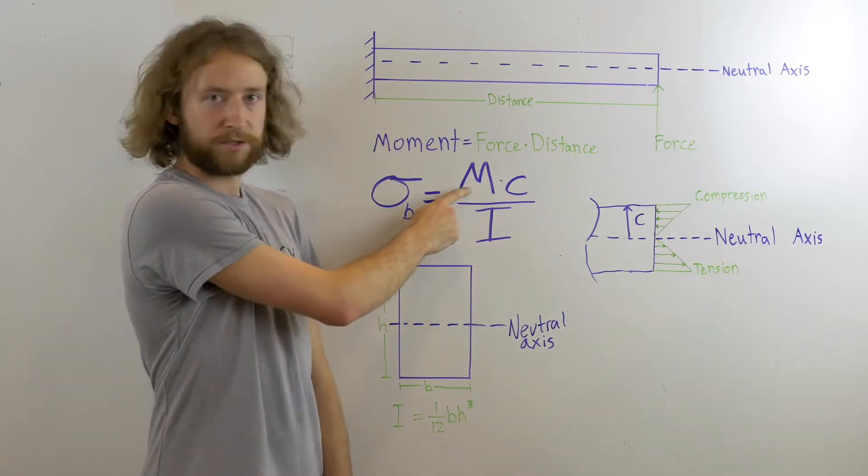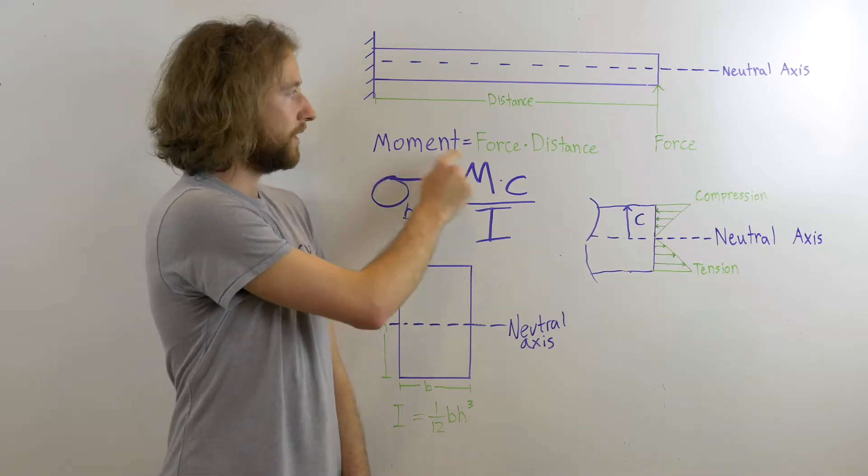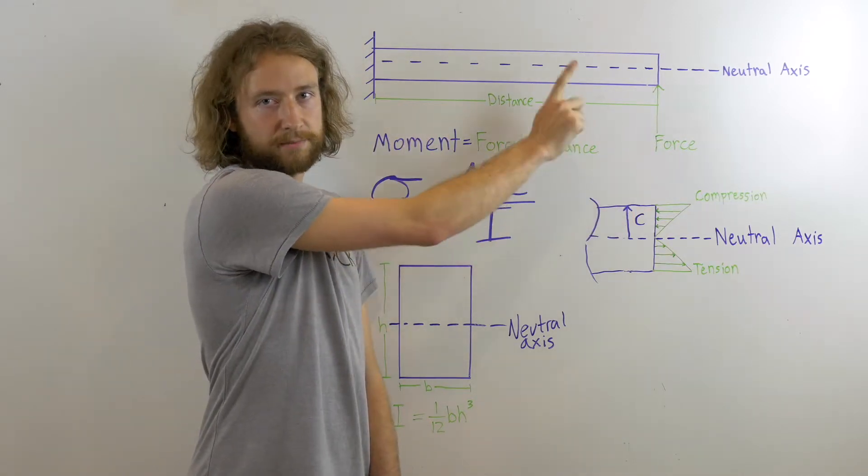To find the first part of your equation m, the moment, multiply the force on the wing times the distance.